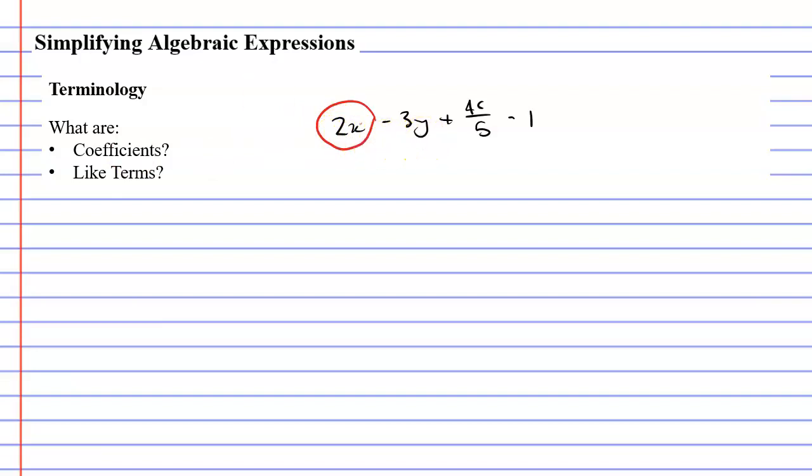What coefficient does y have? Y has a coefficient of negative 3. It's very important that you include the negative if it has one. Alright, so what's the coefficient of c? Is the coefficient of c 4? Well actually it's a little more complicated than that. The coefficient of c is actually 4 over 5. So we have to include the number below the fraction line here.